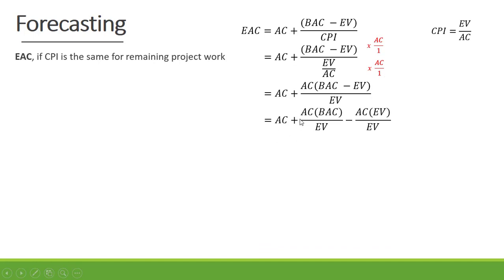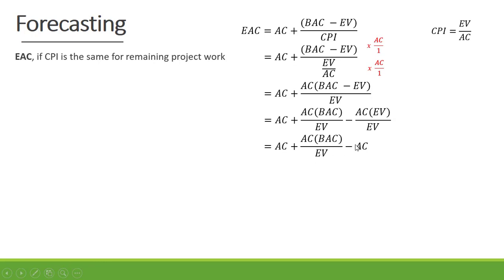Now expanding: actual cost plus actual cost times budget at completion divided by earned value, minus actual cost times earned value over earned value — and the earned value cancels out. So we get actual cost plus actual cost times budget at completion divided by earned value, minus actual cost.